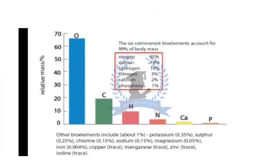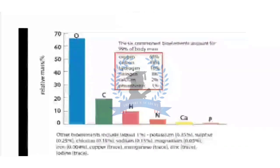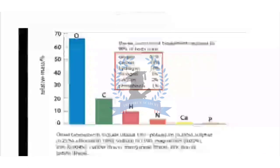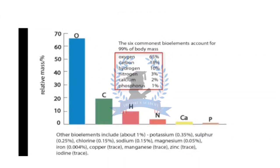Let's look at this percentage composition of bioelements by mass of a human being. Here you can see there is relative mass percentage from 0 to 70, and there are bars in this graph showing oxygen, carbon, hydrogen, nitrogen, and their percentages in the human body. Oxygen accounts for 65% of body mass, carbon 18%, hydrogen 10%, nitrogen 3%, calcium 2%, and phosphorus 1%. These six elements make a total of 99% body mass.